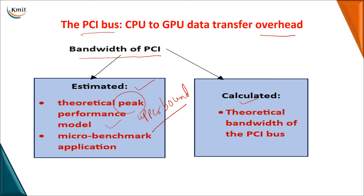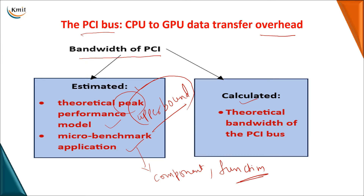We set up a threshold — the amount of bandwidth required for a particular application — which we call the upper bound or peak bound using this model. You also have a micro benchmark application, which is suitable for a small component of your application or a particular function, where you want to know the amount of bandwidth used. The peak bound concentrates on the total program, while the micro benchmark concentrates on only a part of the program.